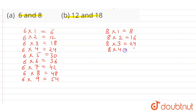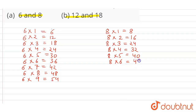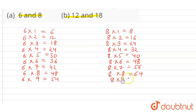Now the multiples of 8: 8 × 3 = 24, 8 × 4 = 32, 8 × 5 = 40, 8 × 6 = 48, 8 × 7 = 56, 8 × 8 = 64, 8 × 9 = 72, and 6 × 10 = 60.